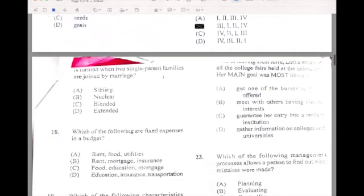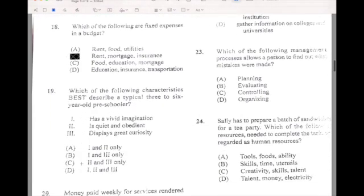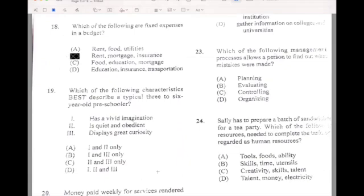I assume this was number seventeen. It's a form of two-parent family that joins together. If you have two parents join together, it would be a nuclear family. Number eighteen, which of the following are fixed expenses: rent, mortgage, and insurance. So our answer for eighteen would be B. Nineteen, which of the following characteristics best describe a typical three-year-old preschooler? Nineteen is B.